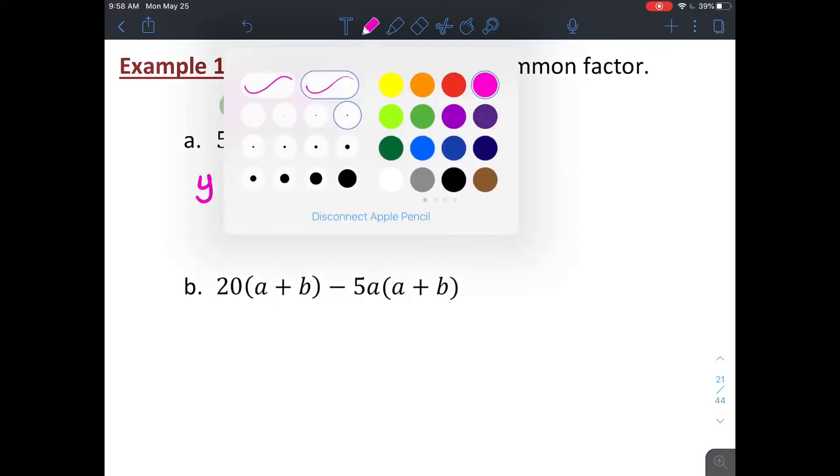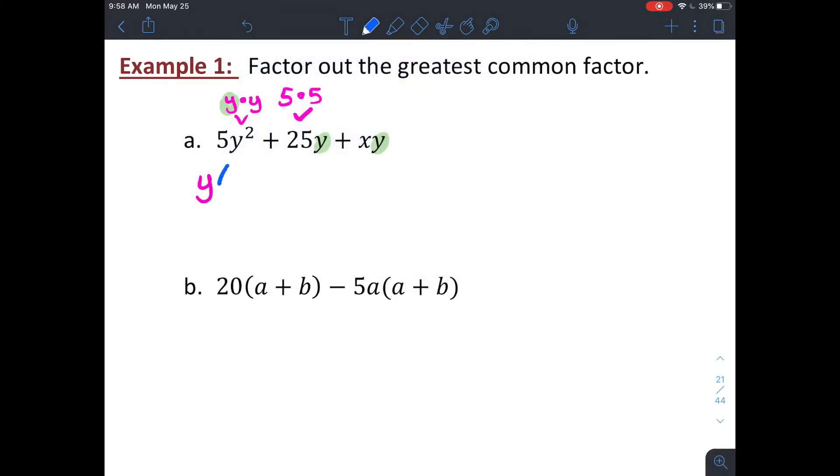So if I factor out a y, which essentially I'm undistributing it or dividing each term by it, that's gonna leave you with 5y plus 25 plus x. And you can check yourself, if you multiply that back it should equal the original, and it does.